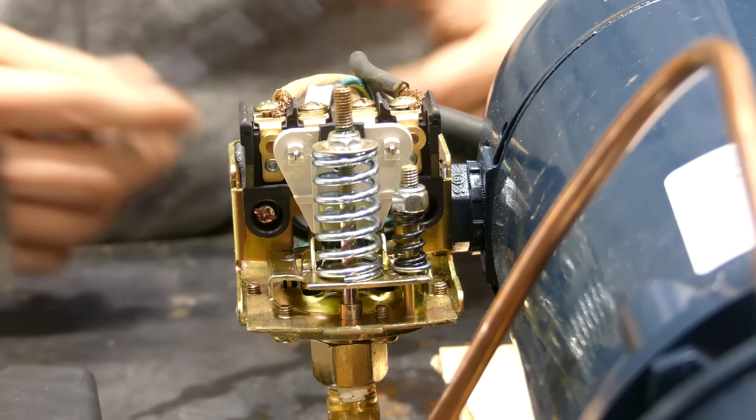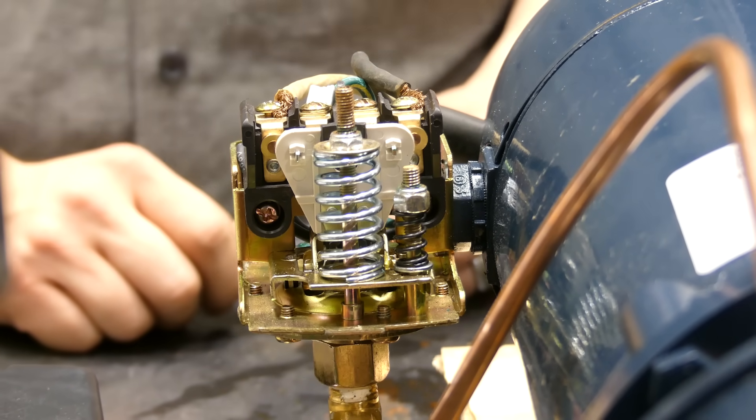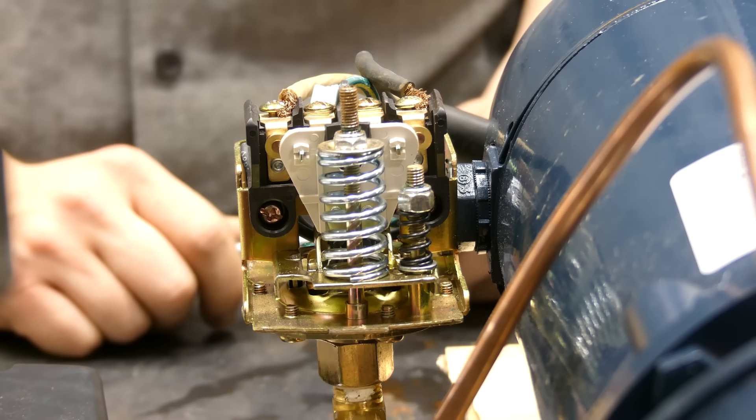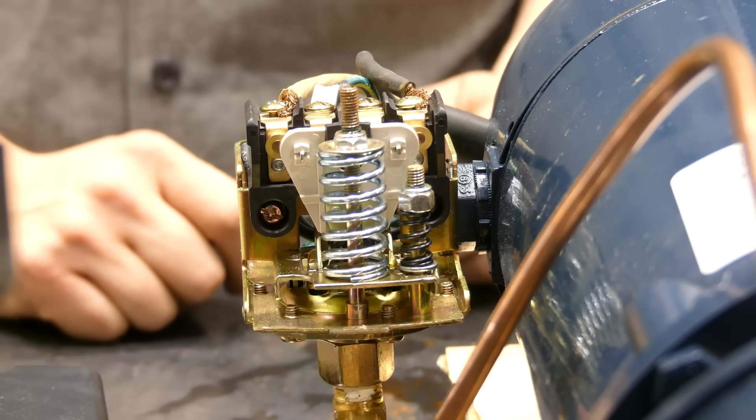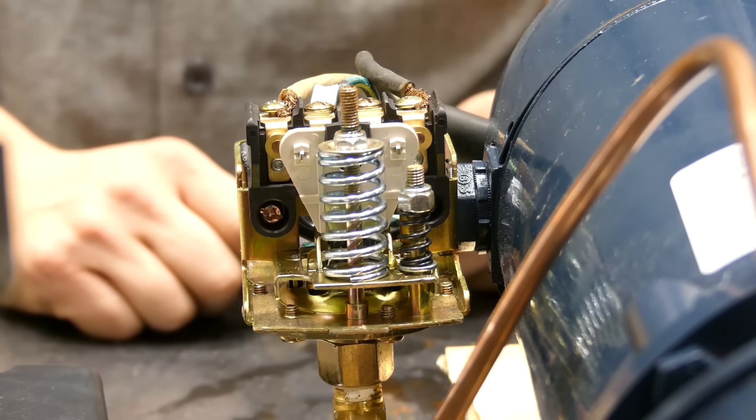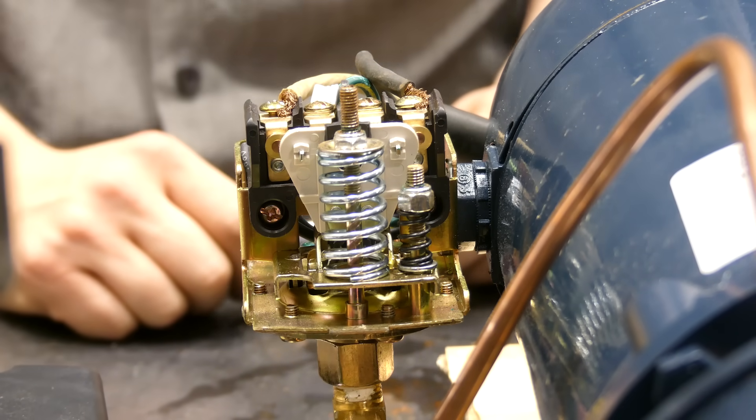If you have a submersible pump, it's most likely going to be set to 40/60 because that's more common with the submersible pumps. And you'll even find some jet pumps, usually smaller horsepower or some centrifugals more focused on irrigation that run on a 20/40 split.